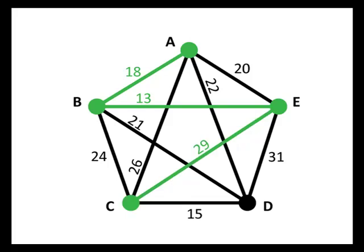Now we're at C, and in fact we really only have one choice. We've been to every vertex except for D. So regardless of which algorithm we're using at this point, we know we're going to want to go from C to D. And then finally, now that we've visited every vertex, we'll go back to A. So here's our Hamiltonian circuit using the nearest neighbor algorithm starting at A.